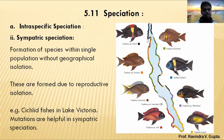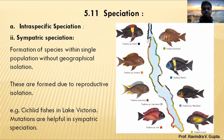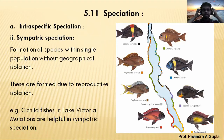The difference between allopatric and sympatric speciation: in allopatric speciation, one species is isolated and then different species form. In sympatric speciation, species are not isolated in one habitat, but different species still form. That is called sympatric speciation.